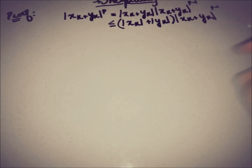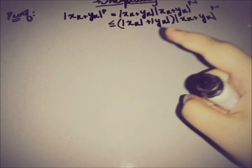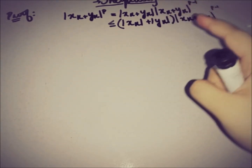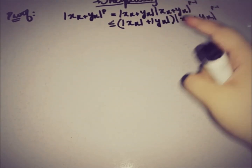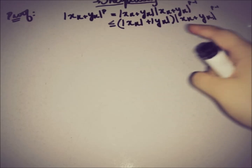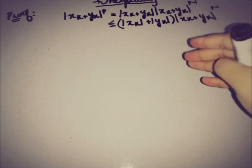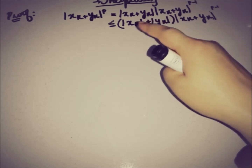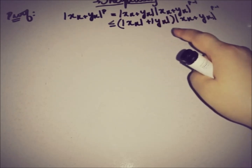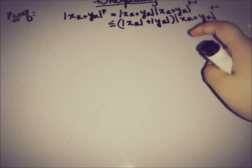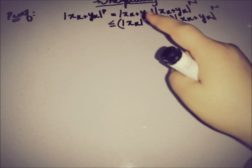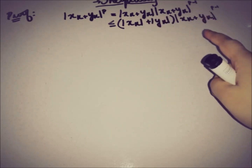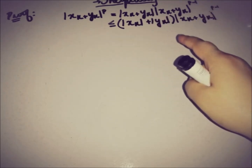By using the triangle inequality, we can write that |xk + yk| is less than or equal to |xk| + |yk|. Multiplying each of |xk| and |yk| by |xk + yk|^(P−1) gives us the expression we need on the right-hand side.